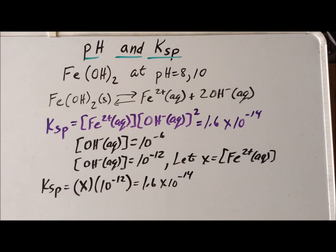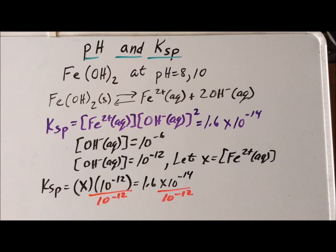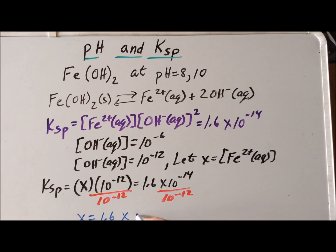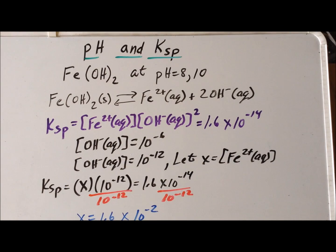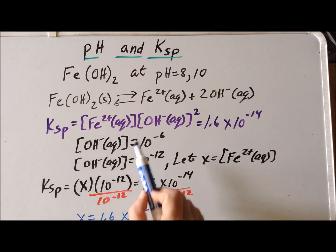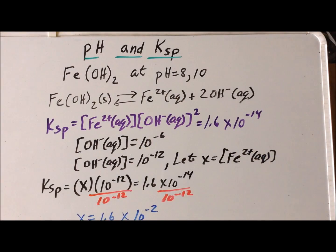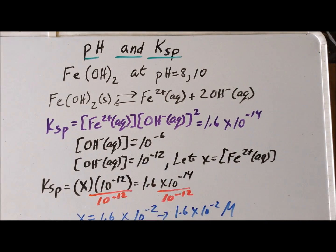To solve for x, we simply divide each side by 10⁻¹². This tells us that x = 1.6, and dividing the powers of 10 gives −14 minus (−12) = 10⁻². So the concentration of iron 2 plus at equilibrium is 1.6 × 10⁻² M. Since we get exactly 1 mole of iron 2 plus for every mole of iron 2 hydroxide that dissolves, the molar solubility of iron 2 hydroxide is 1.6 × 10⁻² M at pH 8.